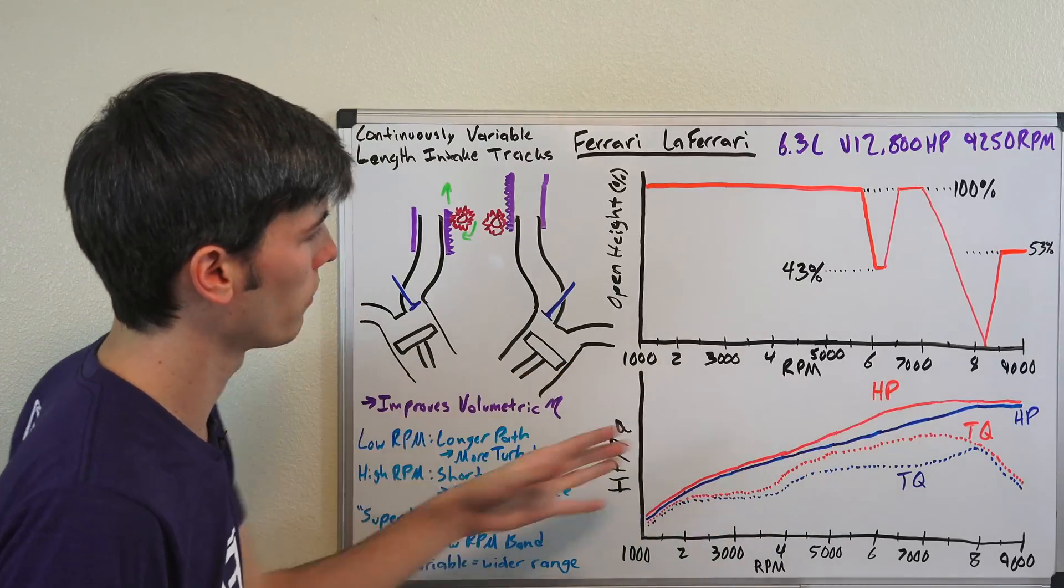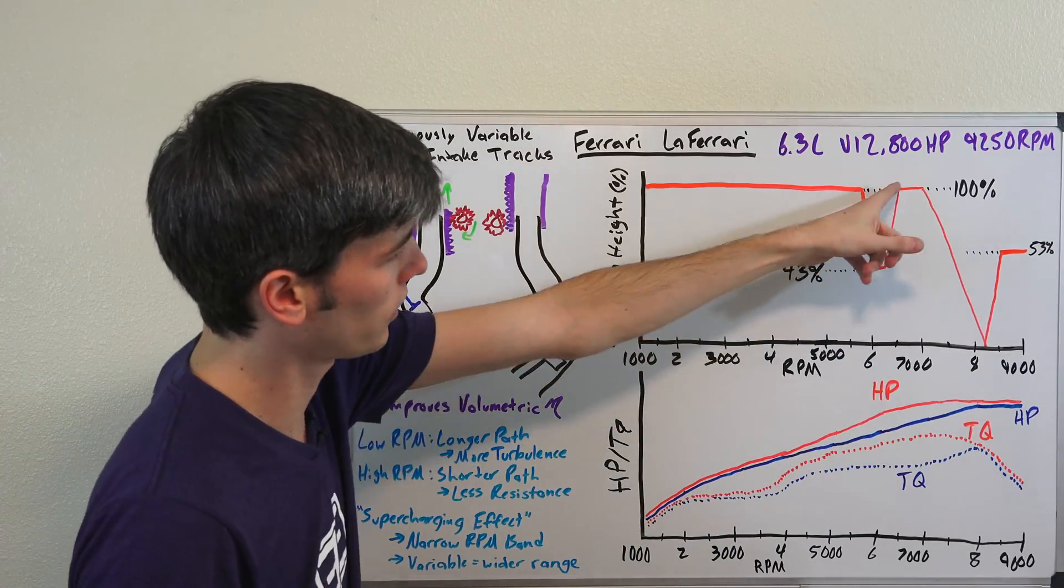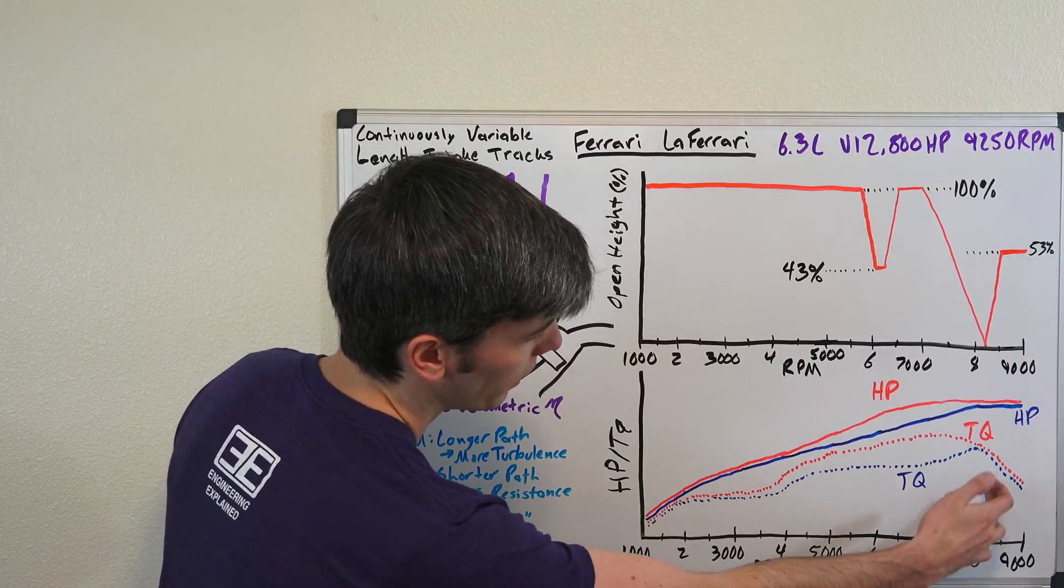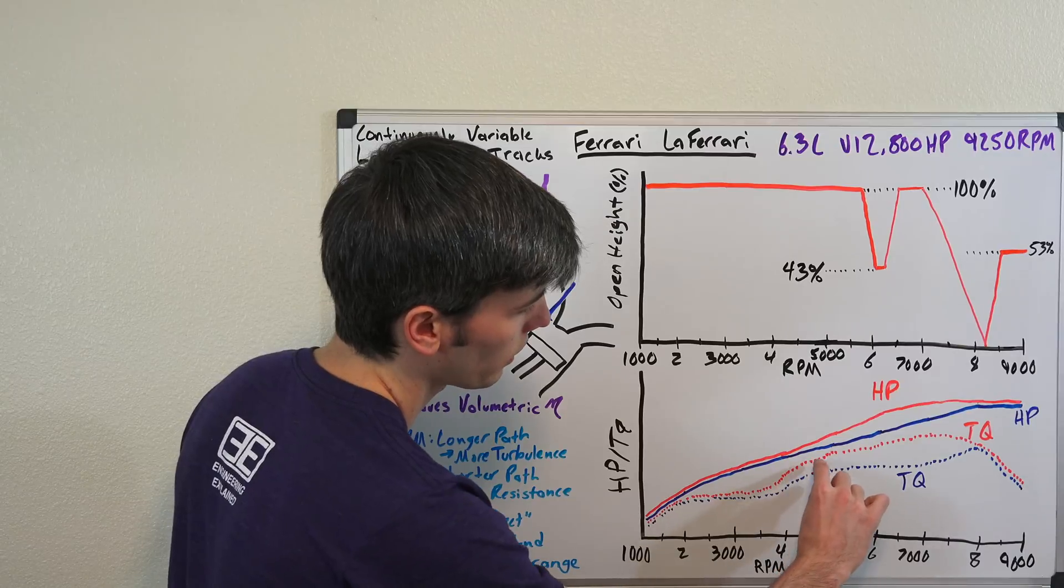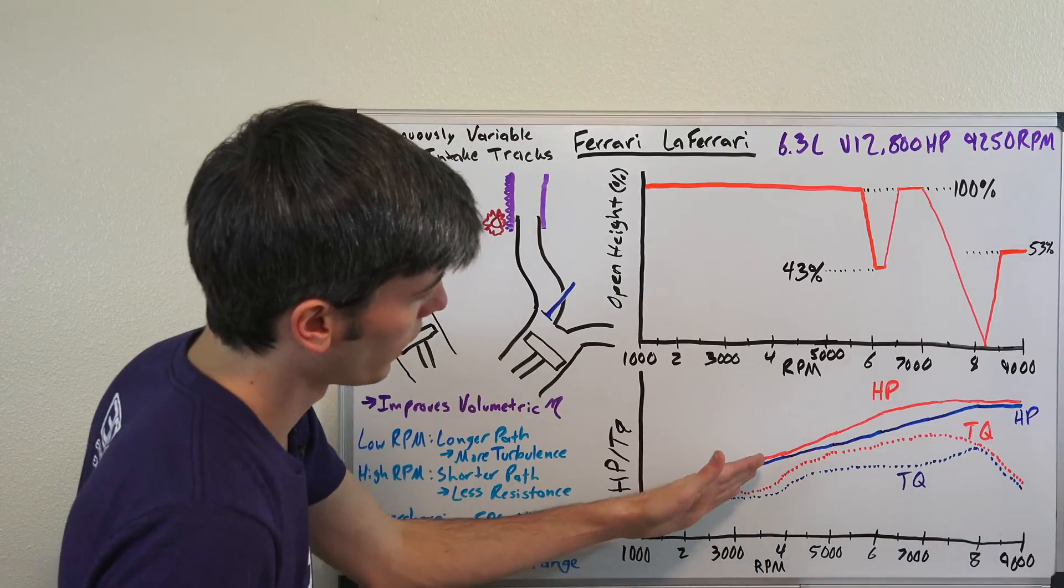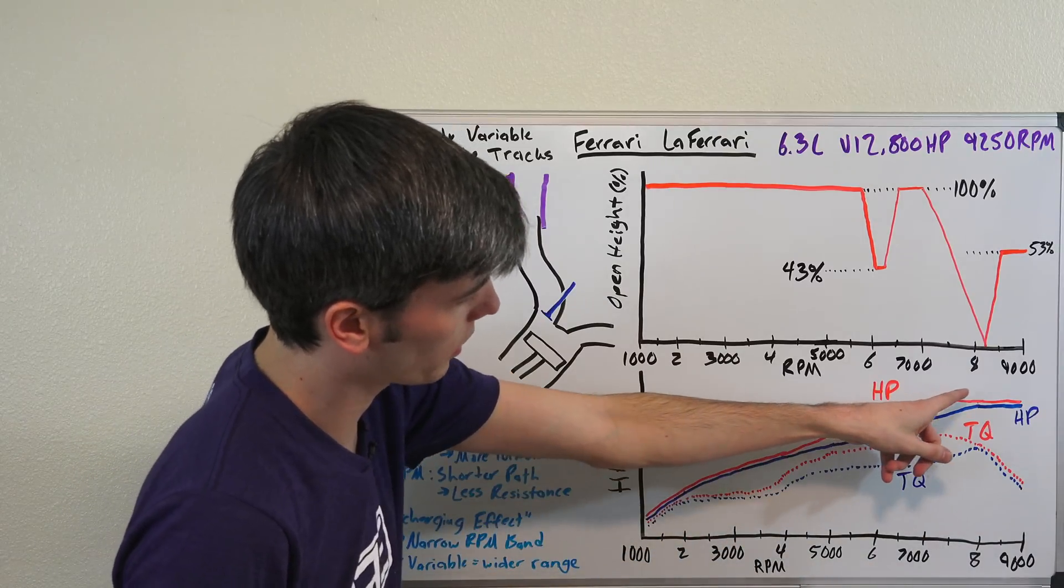Which they have done right here. And so you can see from about 4,000 RPM to about 8,000 RPM they've significantly been able to boost the amount of torque that the engine produces, and so you have this nice little bump in the horsepower curve as well in that range.